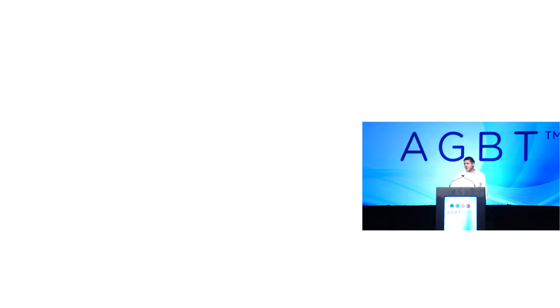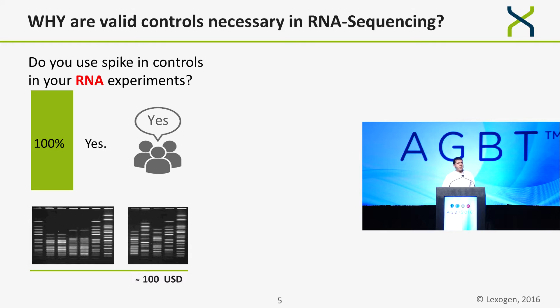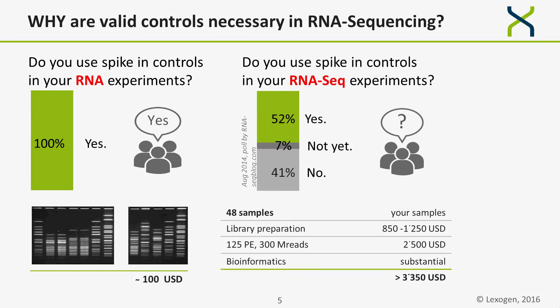If I ask: do you use spike-in controls in RNA experiments? Every one of you would say yes, of course — I have never seen an electrophoresis without a marker, because I want to compare samples in an experiment. But if you slightly change the question to: do you spike-in controls in RNA-seq experiments? Only half are regularly using controls, and publications make hardly any use of controls available. RNA-seq experiments are quite expensive — not only the precious samples themselves, but library prep, sequencing, and the bioinformatics pipeline afterwards. Time, effort, and costs add up to a substantial amount.